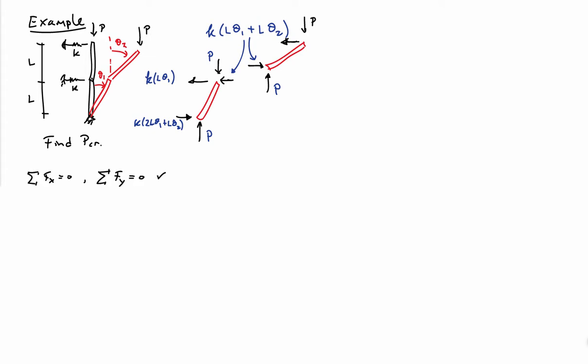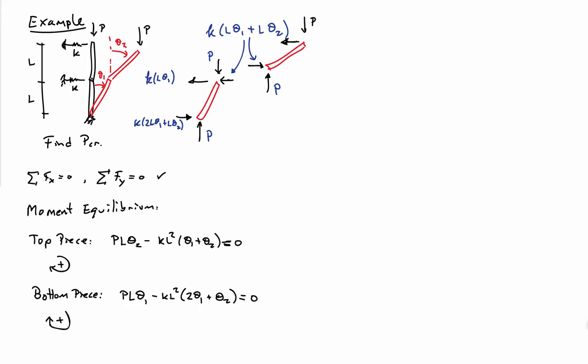I've now satisfied force equilibrium in the horizontal direction and force equilibrium in the vertical direction. This is a two-dimensional problem, so I still have to enforce moment equilibrium. To do moment equilibrium for each piece, for the top piece I take the sum of moments — using clockwise moments as positive — about the bottom pin. I can write moment equilibrium for the bottom piece as well. These are my two equilibrium equations for the system: the force equilibrium equations are identically satisfied, and I have two moment equilibrium equations, one for each piece.